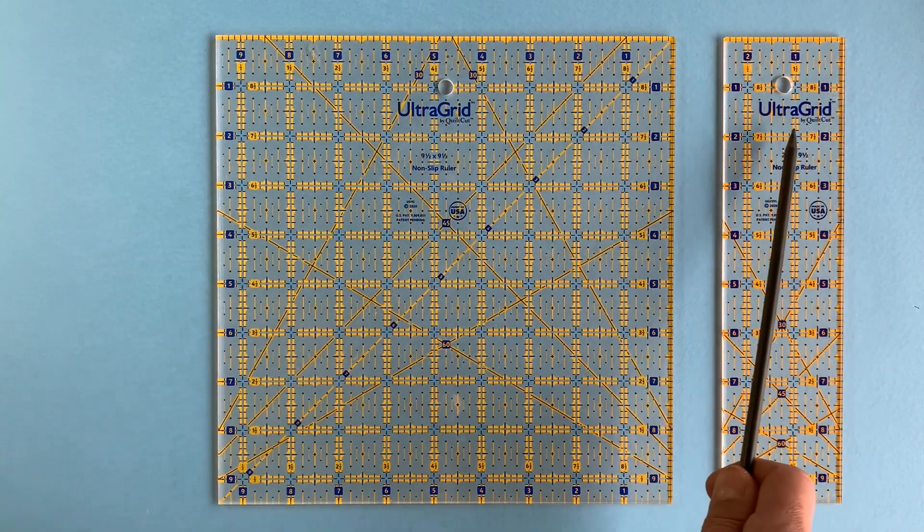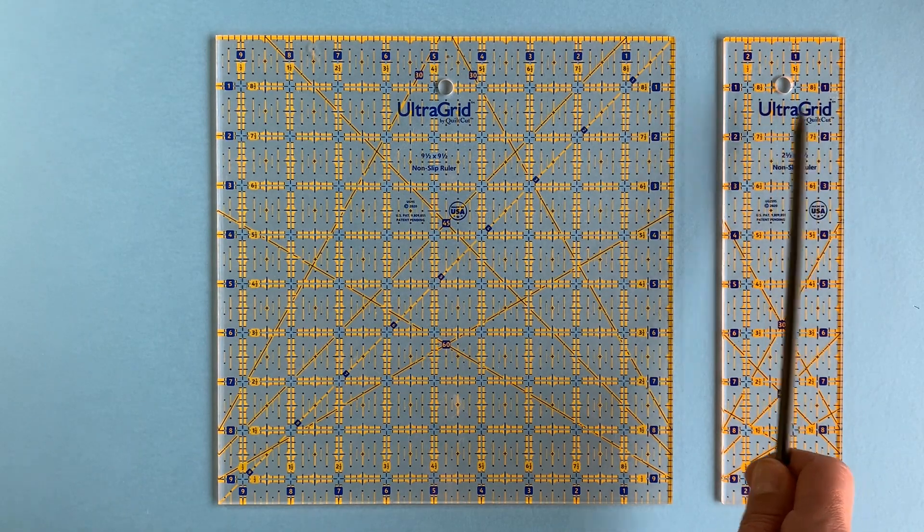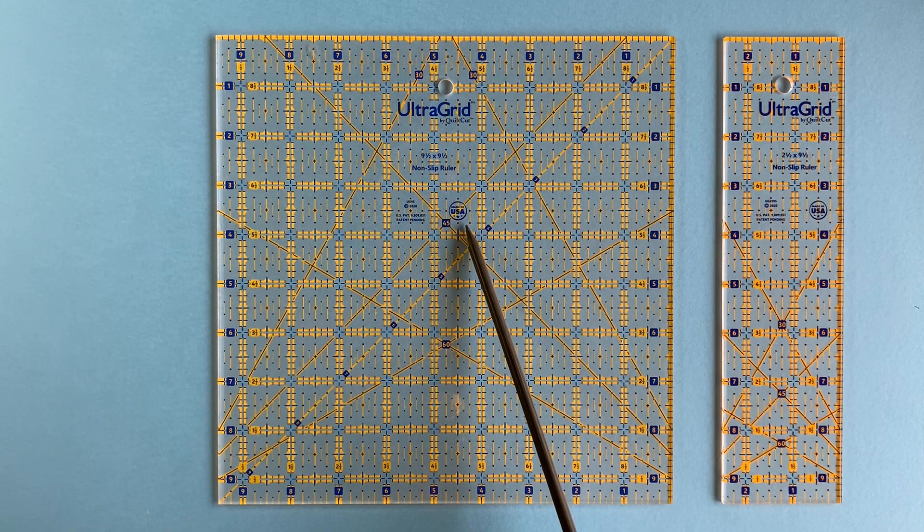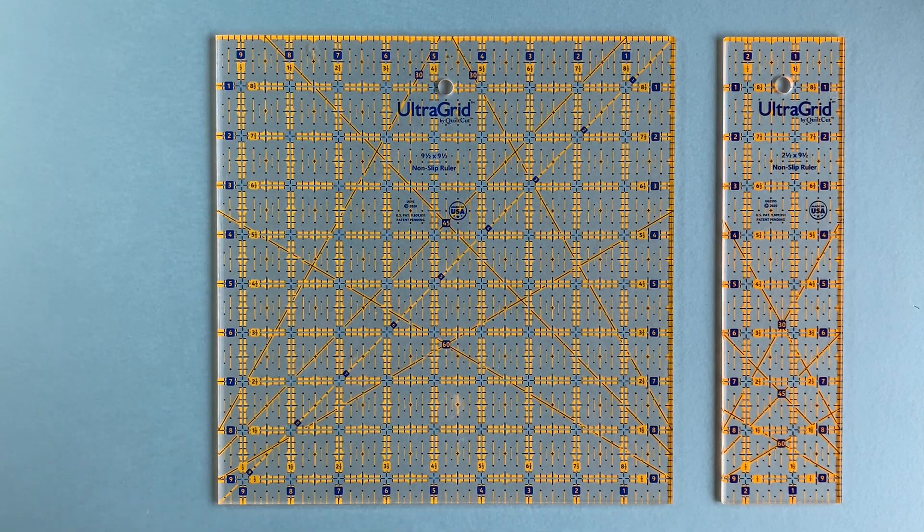UltraGrid rulers by QuiltCut are proudly made in the USA. We are a Pacific Northwest company that has been designing and manufacturing quilting products since 1989.